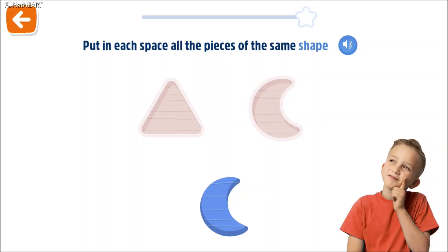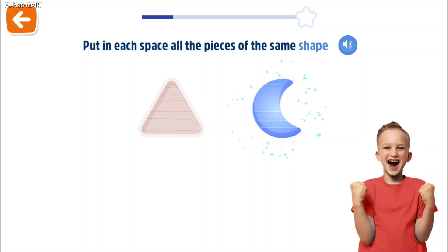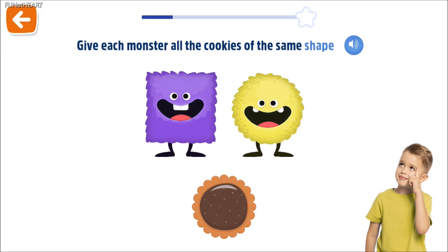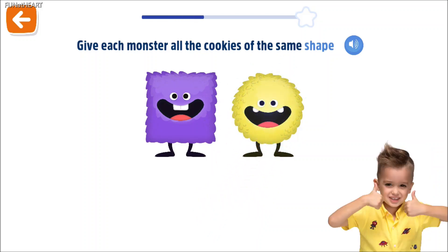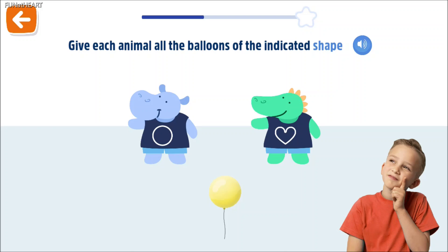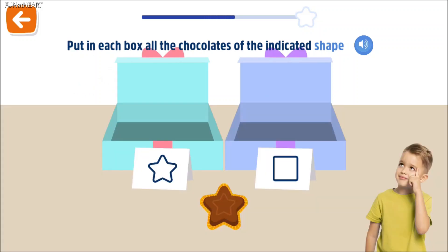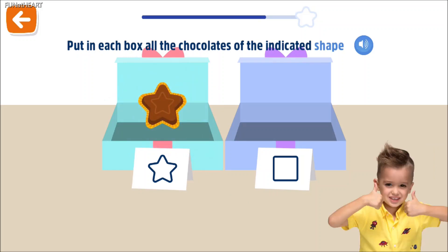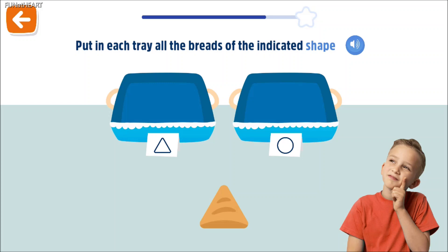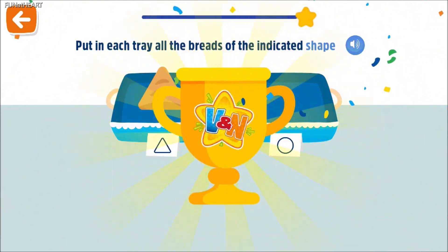Put in each space all the pieces of the same shape. Cool! Give each monster all the cookies of the same shape. Cool! Give each animal all the balloons of the indicated shape. Excellent! Put in each box all the chocolates of the indicated shape. Cool! Put in each tray all the breads of the indicated shape. Cool! Awesome!